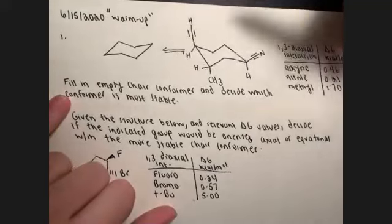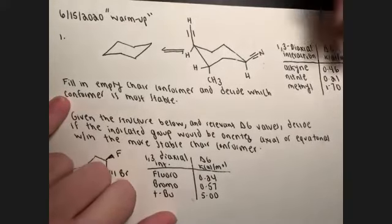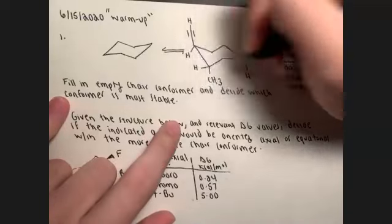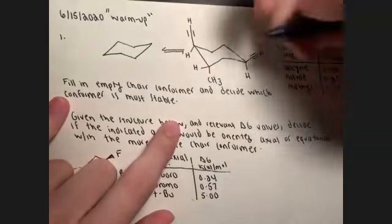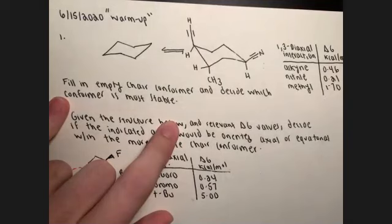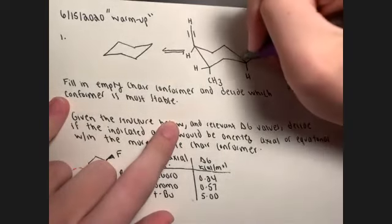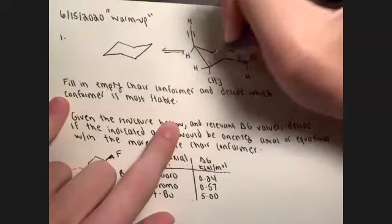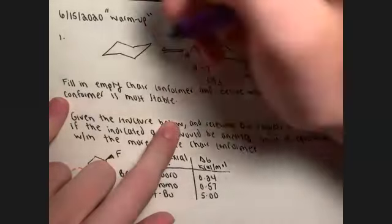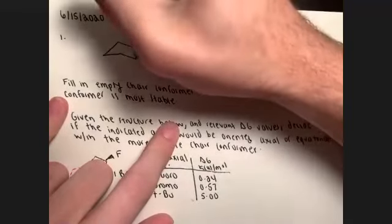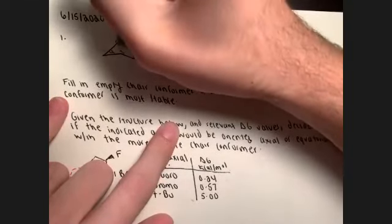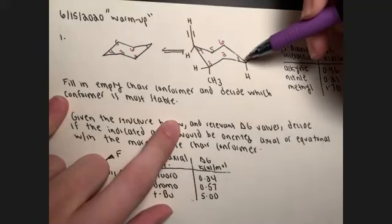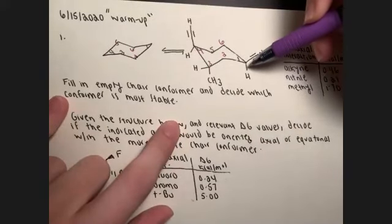For the first question: fill in the empty chair conformer and decide which conformer is the most stable. We know either carbon one or four is pulled up and out of plane. Let's number our carbons: one, two, three, four, five, six, and also number the template the same way.